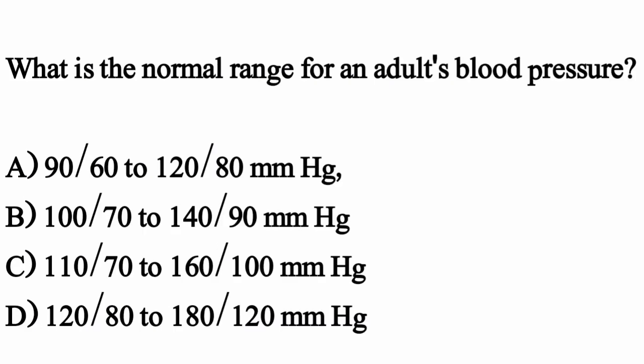What is the normal range for adult blood pressure? The correct option is Option A: 90/60 to 120/80 mmHg.